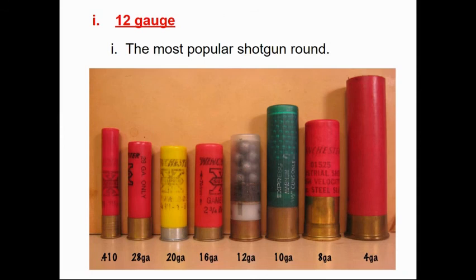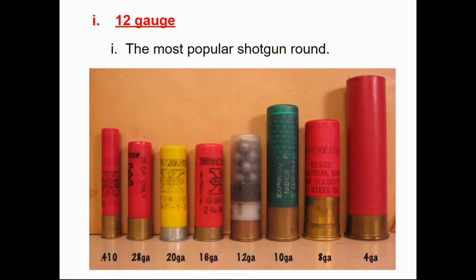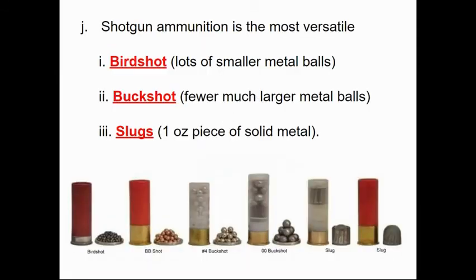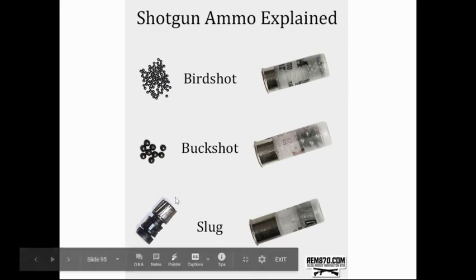Moving to shotgun rounds: 12 gauge is the most popular. The sizing is backwards from what you might expect — a 4 gauge is large and a 28 gauge is small. Note that the .410 is measured in inches, not gauge, so it's not all consistent. Shotgun ammunition is the most versatile: buckshot consists of larger metal balls, birdshot is smaller, and a slug is a single solid piece of metal — usually about one ounce — available in different shapes, sizes, and designs.